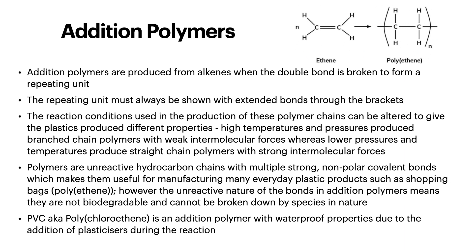Addition polymers are produced from alkenes when the double bond is broken to form a repeating unit. The repeating unit must always be shown with extended bonds through the brackets. High temperatures and pressures produce branched-chain polymers with weak intermolecular forces, whereas lower pressures and temperatures produce straight-chain polymers with strong intermolecular forces. Polymers are unreactive hydrocarbon chains with multiple strong non-polar covalent bonds, making them useful for everyday plastic products such as shopping bags. However, their unreactive nature means they are not biodegradable. PVC is an addition polymer with waterproof properties due to the addition of plasticisers during the reaction.